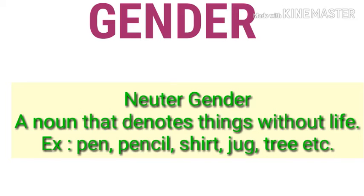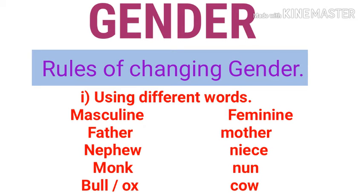There are certain words like 'tree' — a tree is a living thing, but still it is identified as neuter gender in English. These are the four kinds of gender. Now there are certain rules about changing genders from masculine to feminine; there are four rules, and let us know the rules properly.